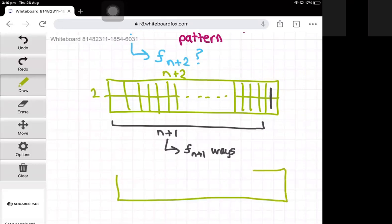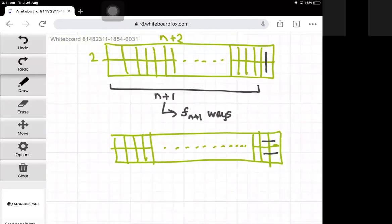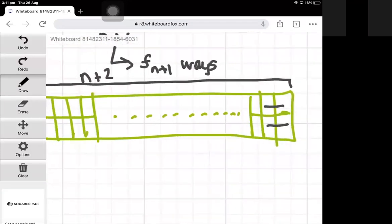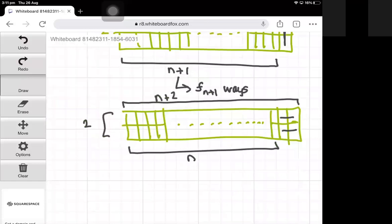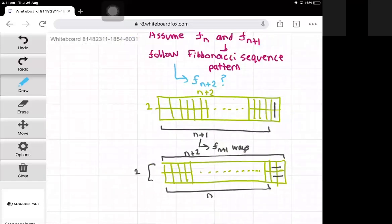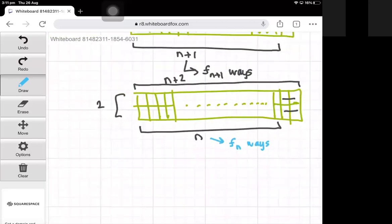The second possibility for the very right edge: we could do two horizontals on the very right edge. If we have two horizontals, what we have left to tile is just a 2×n grid, and to tile the 2×n grid, it's going to take F of n ways.